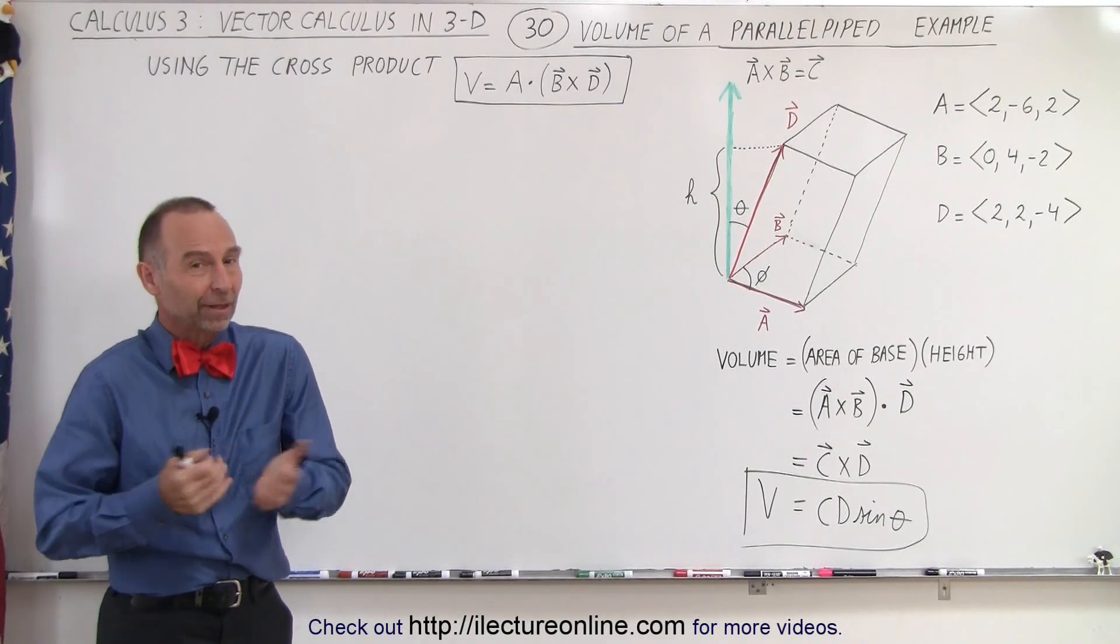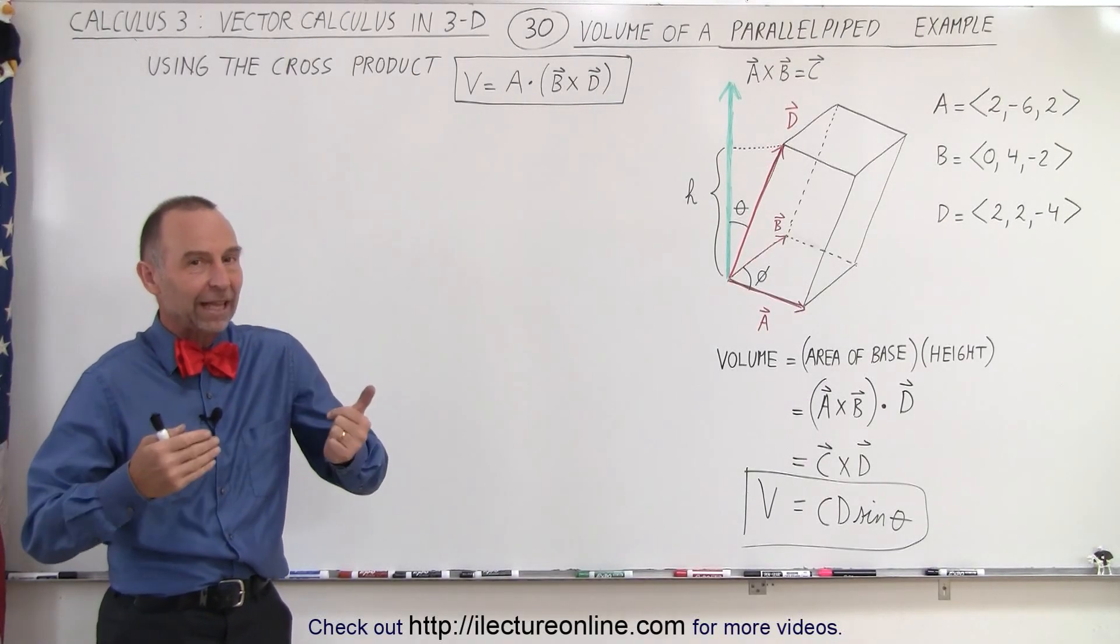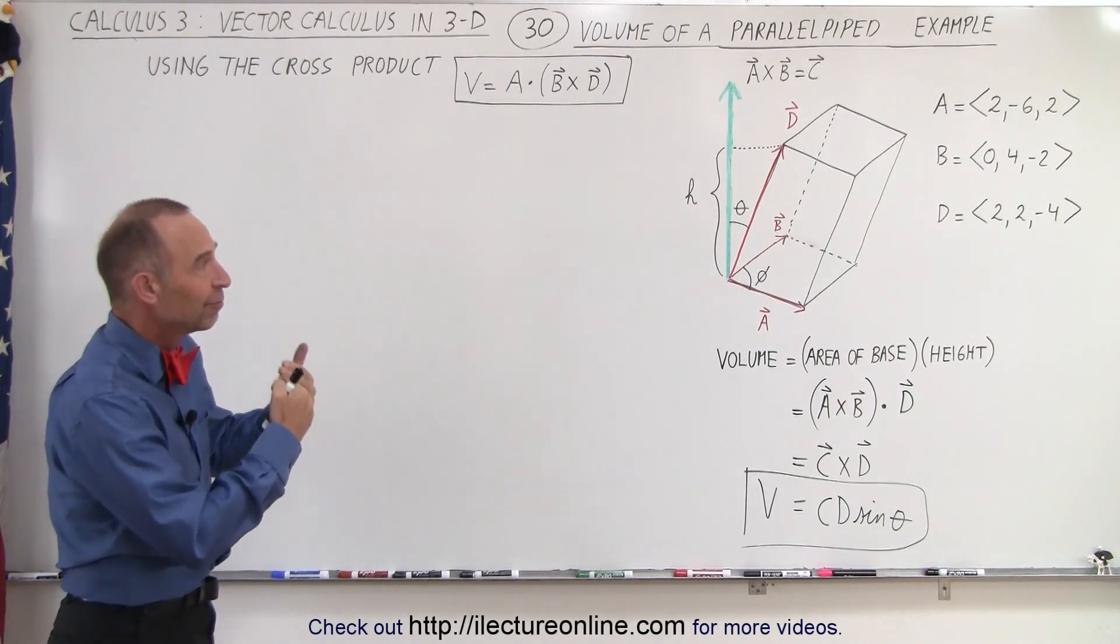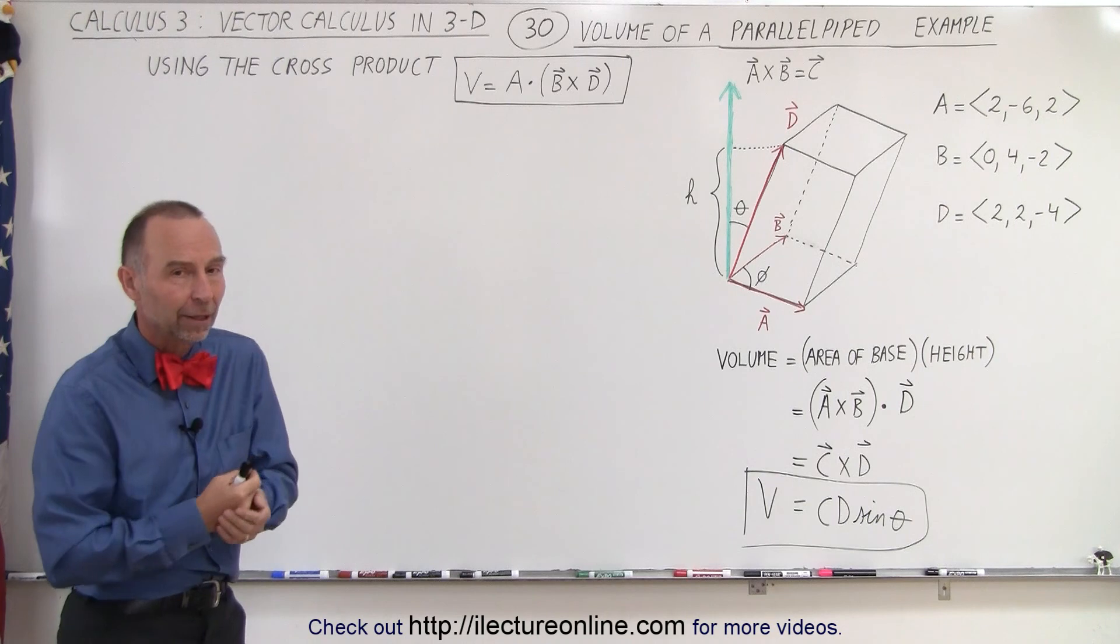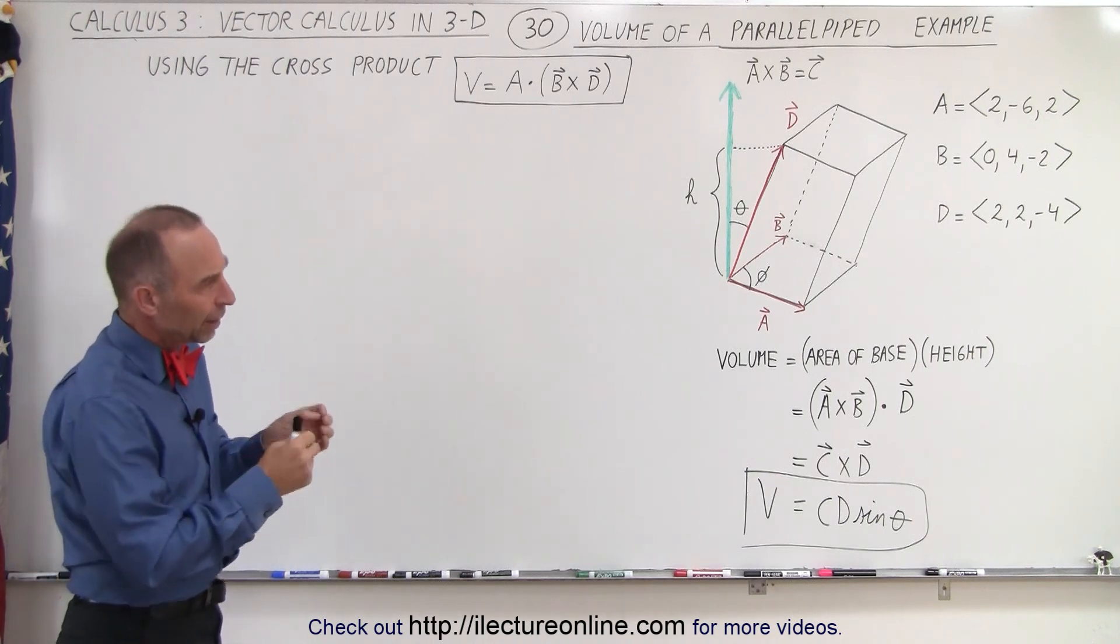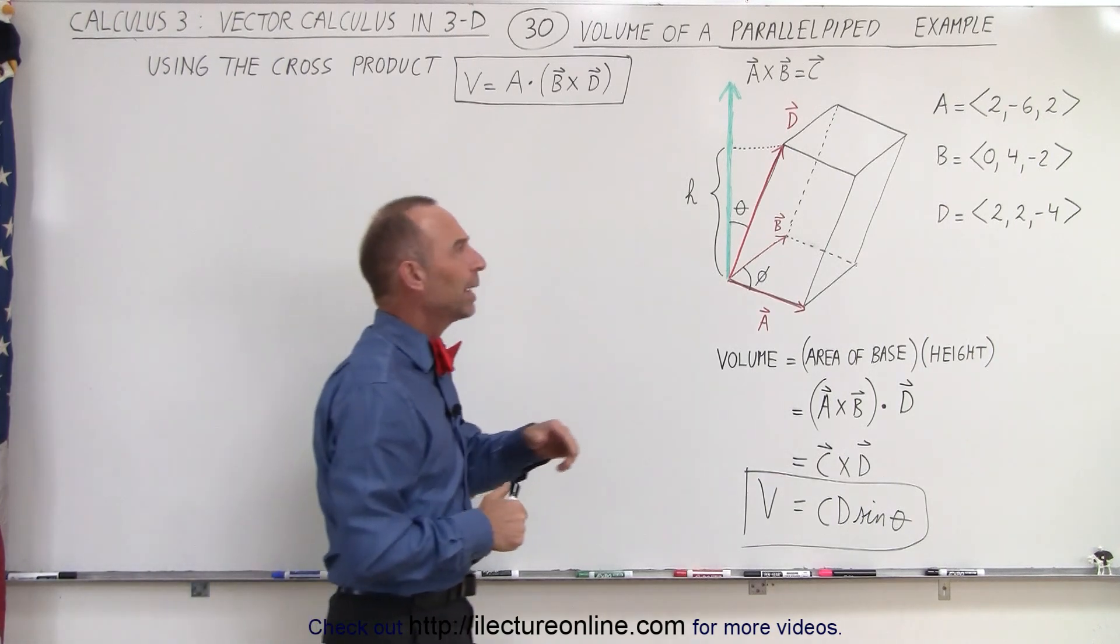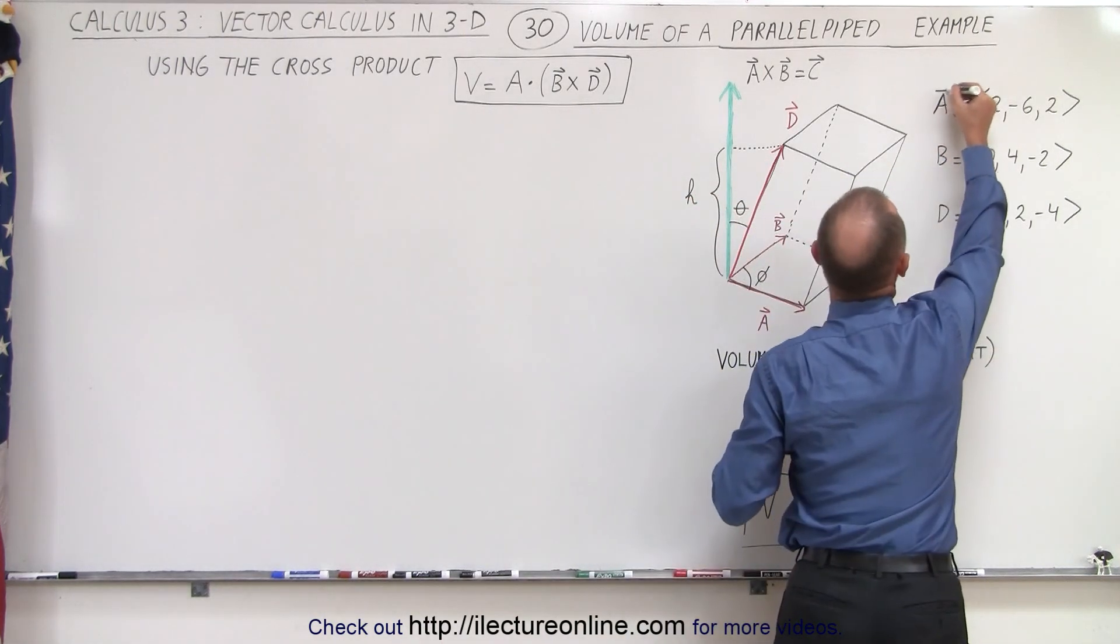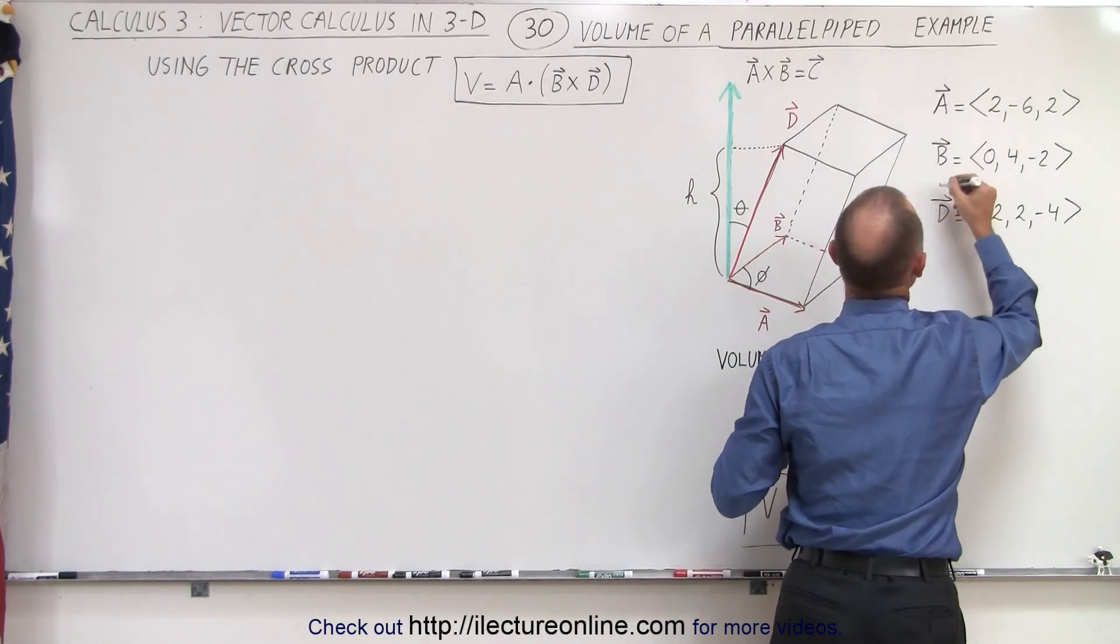Welcome to iLectureOnline. Nothing like an example to help us understand a theory or a concept. So here we're going to find the volume of a parallelepiped, a real example. A little bit simplified by the fact that they already gave us the three vectors. And of course I should turn those into vector quantities A, B, and D.